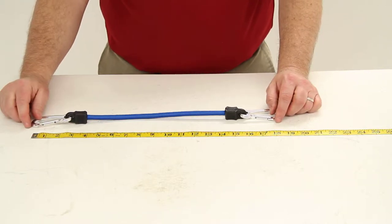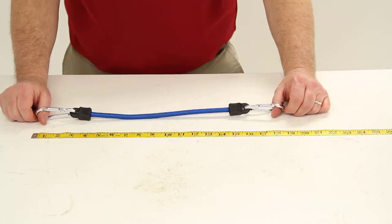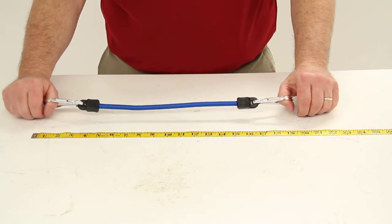Today we're going to review part number 941-7400. This is the Hyland heavy duty carabiner bungee cord.